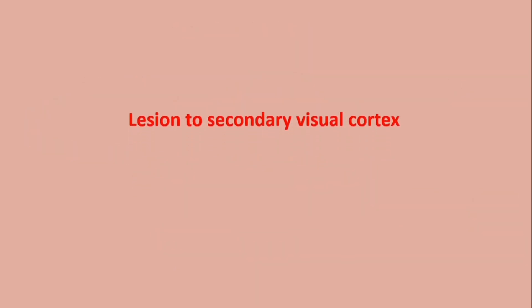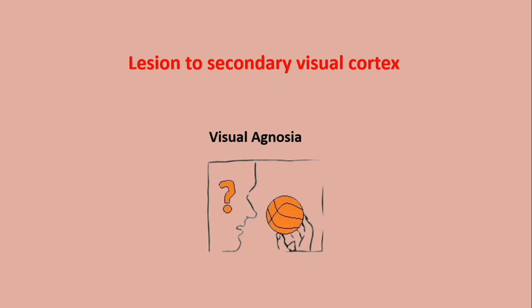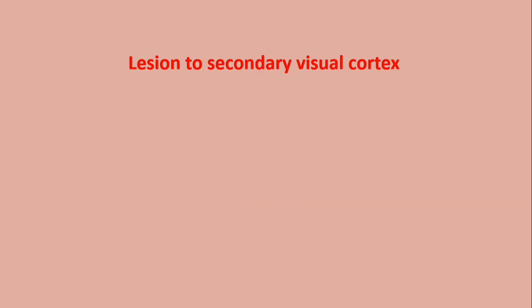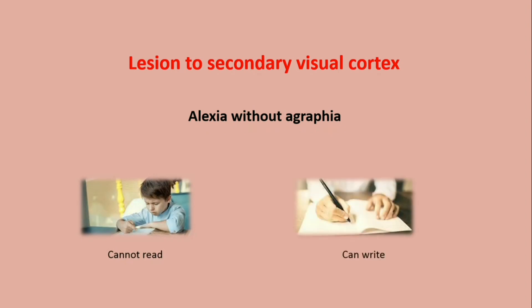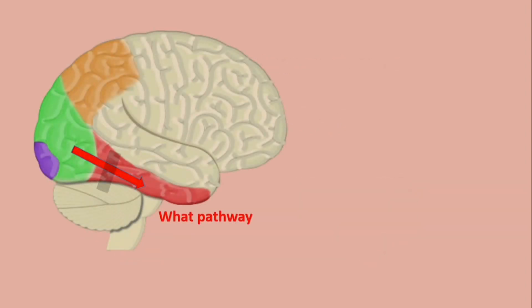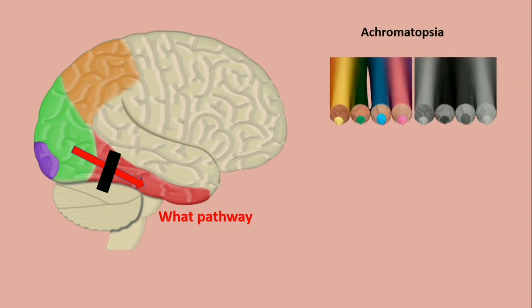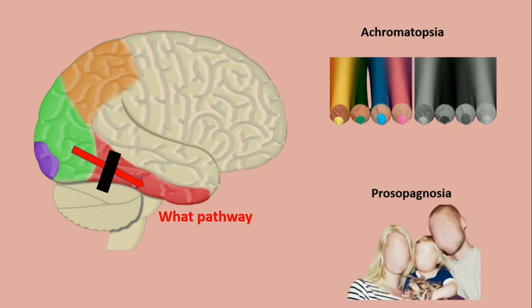A lesion to the secondary visual cortex, specifically the temporal area, leads to visual agnosia — the person is unable to identify objects. There is also alexia without agraphia, meaning the person is unable to read but can write. A lesion to the ventral pathway leads to achromatopsia, a complete loss of color vision, and prosopagnosia, the inability to recognize faces.